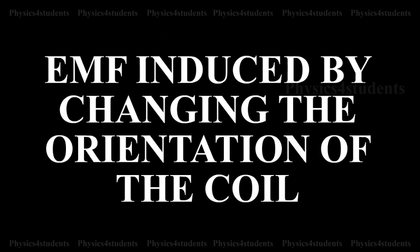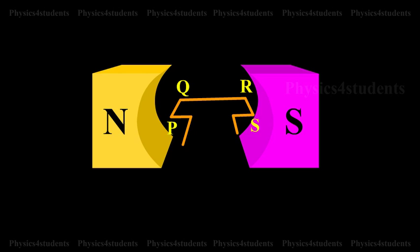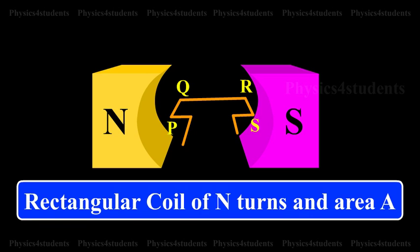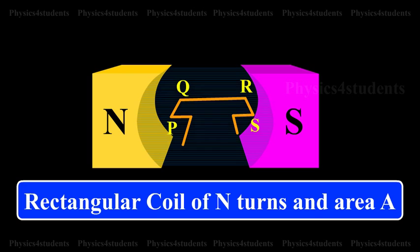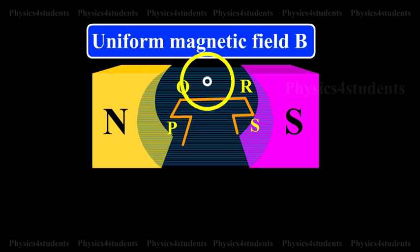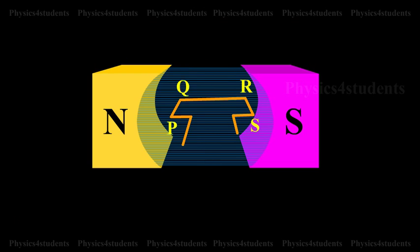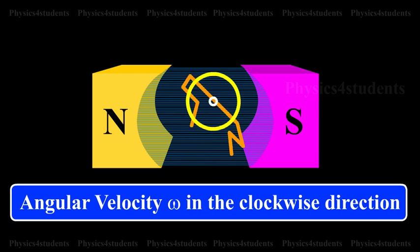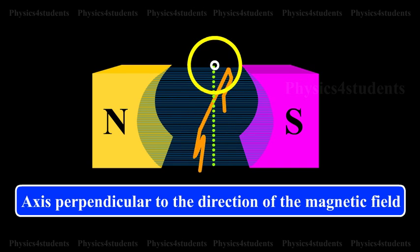EMF induced by changing the orientation of the coil. PQRS is a rectangular coil of N turns and area A placed in a uniform magnetic field B. The coil is rotated with an angular velocity omega in the clockwise direction about an axis perpendicular to the direction of the magnetic field.